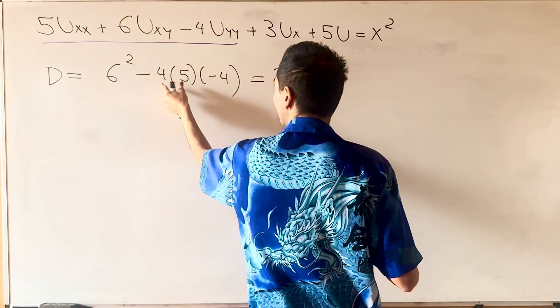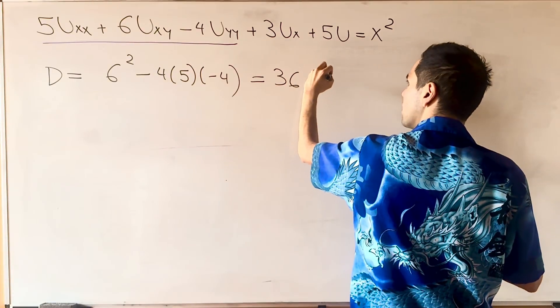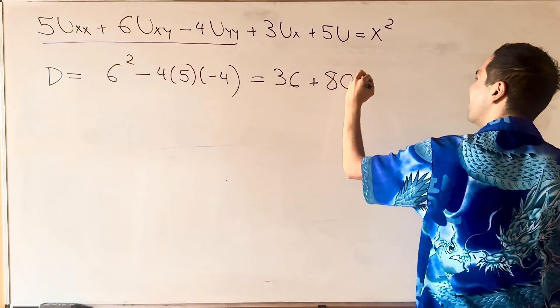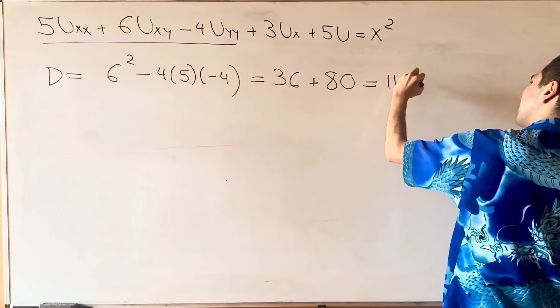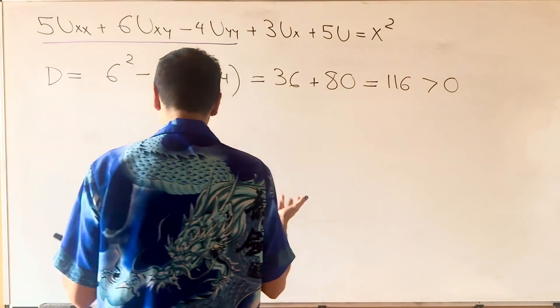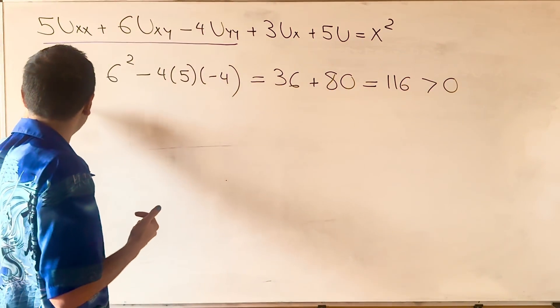Then, 20 times 4 is 80, so 36 plus 80 equals 116. This is positive, so what this tells us is that the PDE, in this case, is hyperbolic.